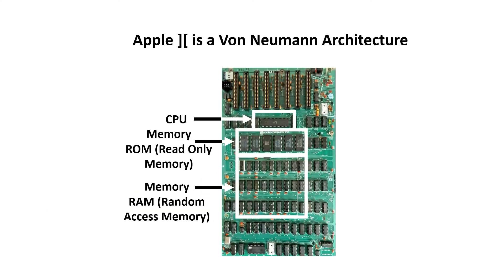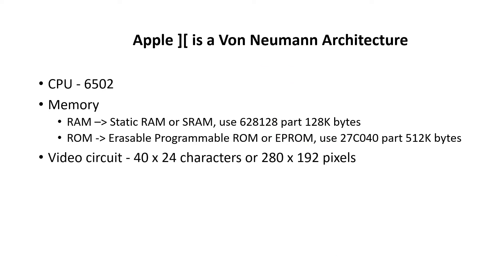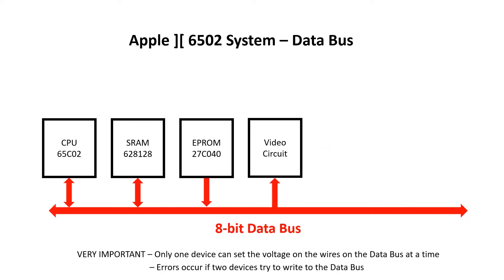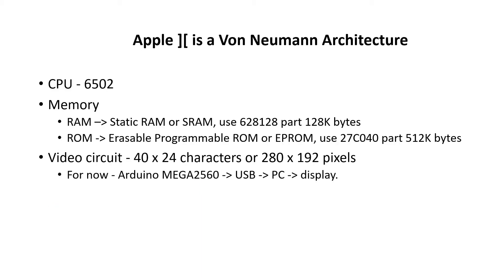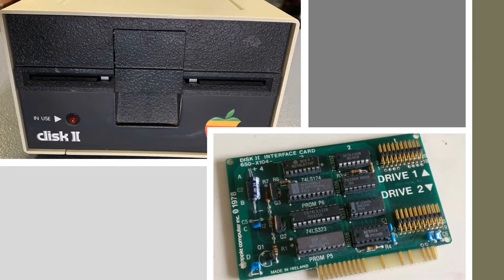A big part of the Apple circuitry is for video and keyboard. I'm planning to build a video circuit later in the playlist, so I'll add it to the block diagram and save the details for later. In the short term, I'll use an Arduino Mega 2560 to send pixel data to a PC for display, and use the same trick in reverse for the keyboard. The Apple II doesn't have any motherboard space dedicated to the floppy drive interface — instead it uses an accessory card, but I don't want to deal with 5.25 inch floppy disks.